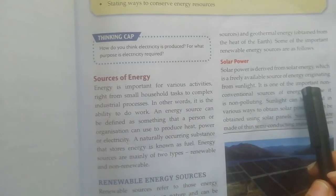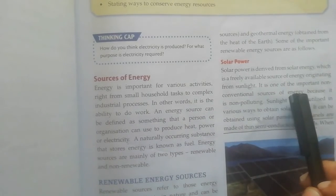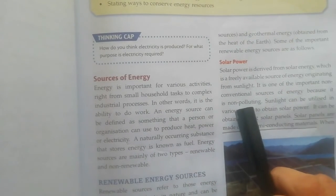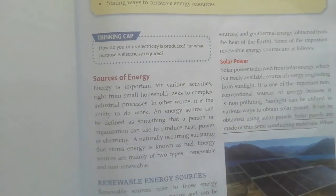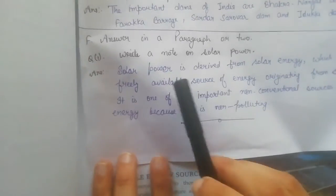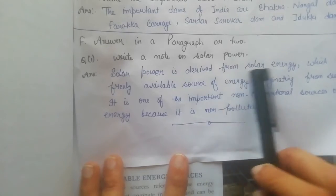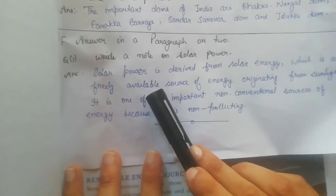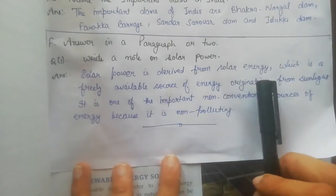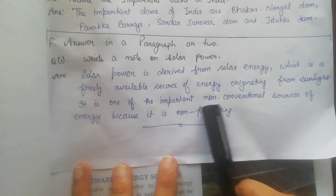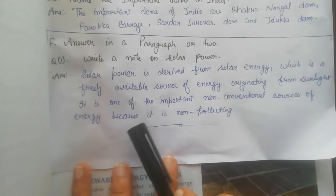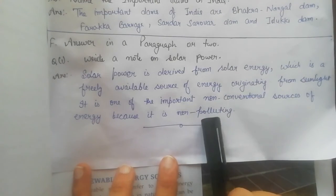It is one of the important non-conventional sources of energy because it is non-polluting. So the answer is: solar power is derived from solar energy, which is a freely available source of energy originating from sunlight. It is one of the important non-conventional sources of energy because it is non-polluting.